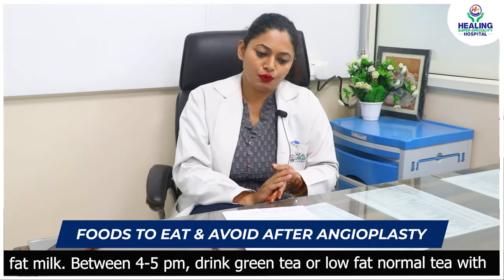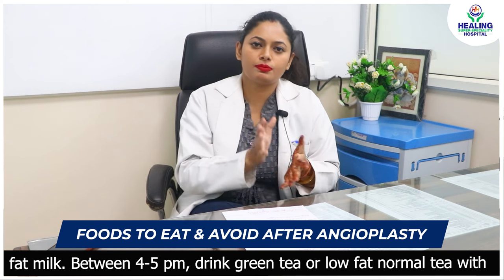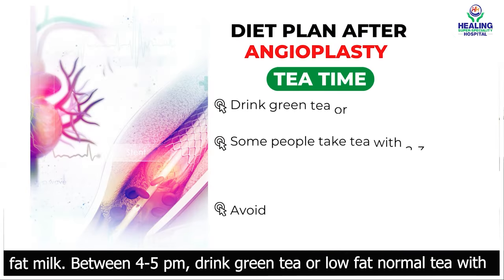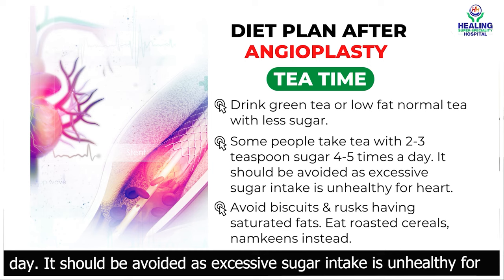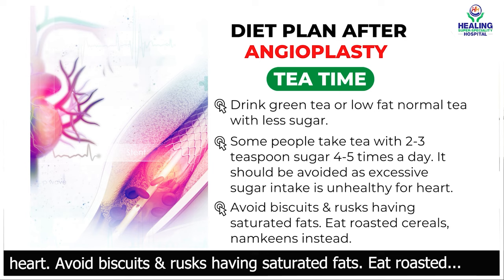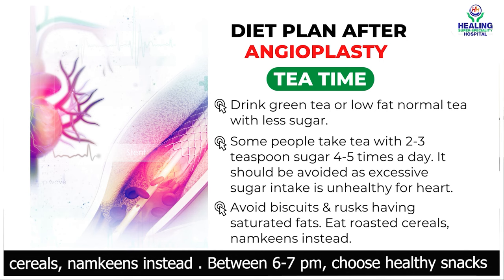Around 4 to 5 o'clock, you can have tea. If you take green tea or normal tea, use low-fat milk with less sugar. Many patients have a lot of sugar intake — drinking 2 to 3 cups of tea a day adds up. Excessive sugar intake is unhealthy for your heart. Also, you don't need biscuits or rusks, as bakery goods contain saturated fats. Instead, use roasted cereals.